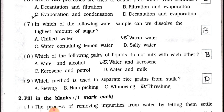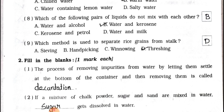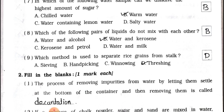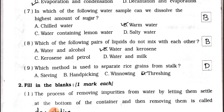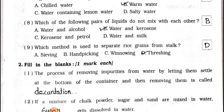Answer is option (b) — warm water. Number eight: Which of the following pairs of liquids do not mix with each other? (a) Water and alcohol, (b) Water and kerosene, (c) Kerosene and petrol, and (d) Water and milk. Answer is option (b) — water and kerosene.